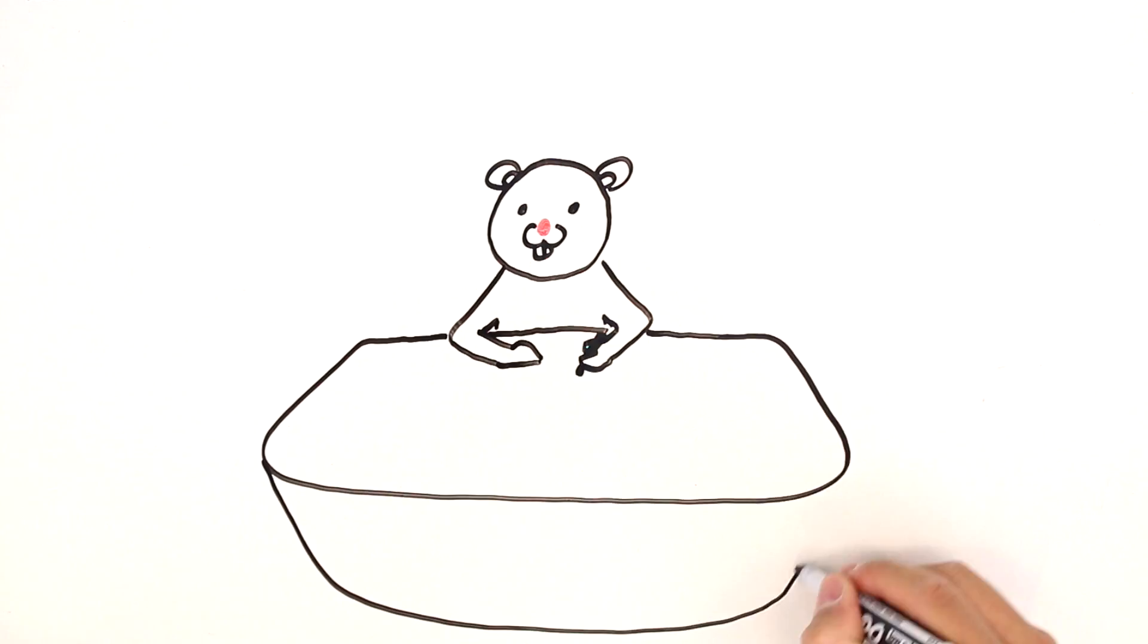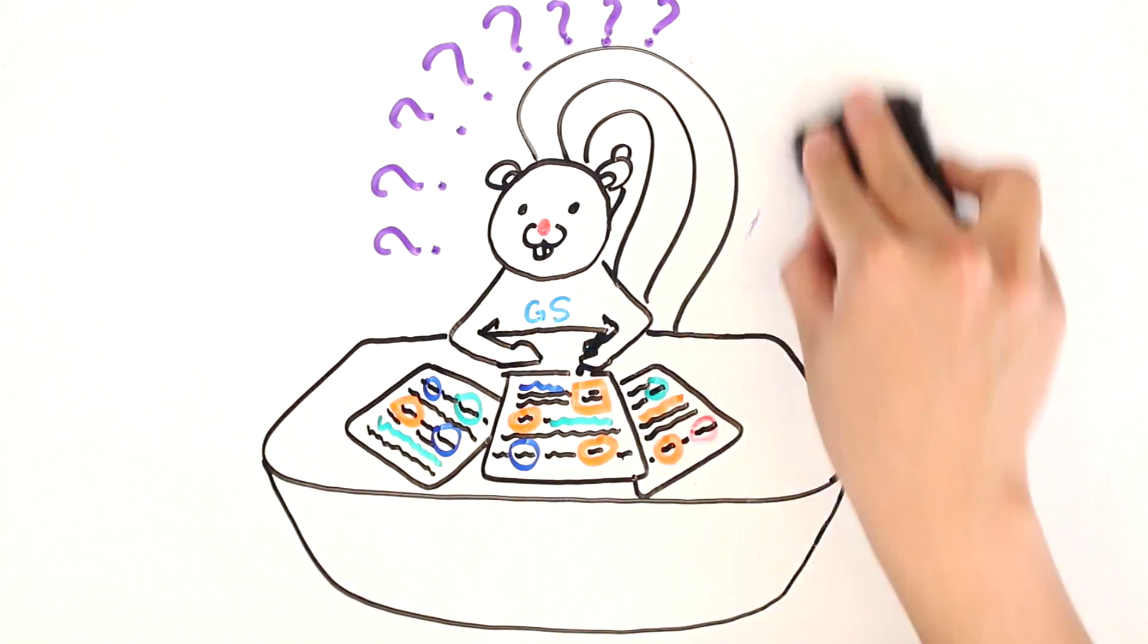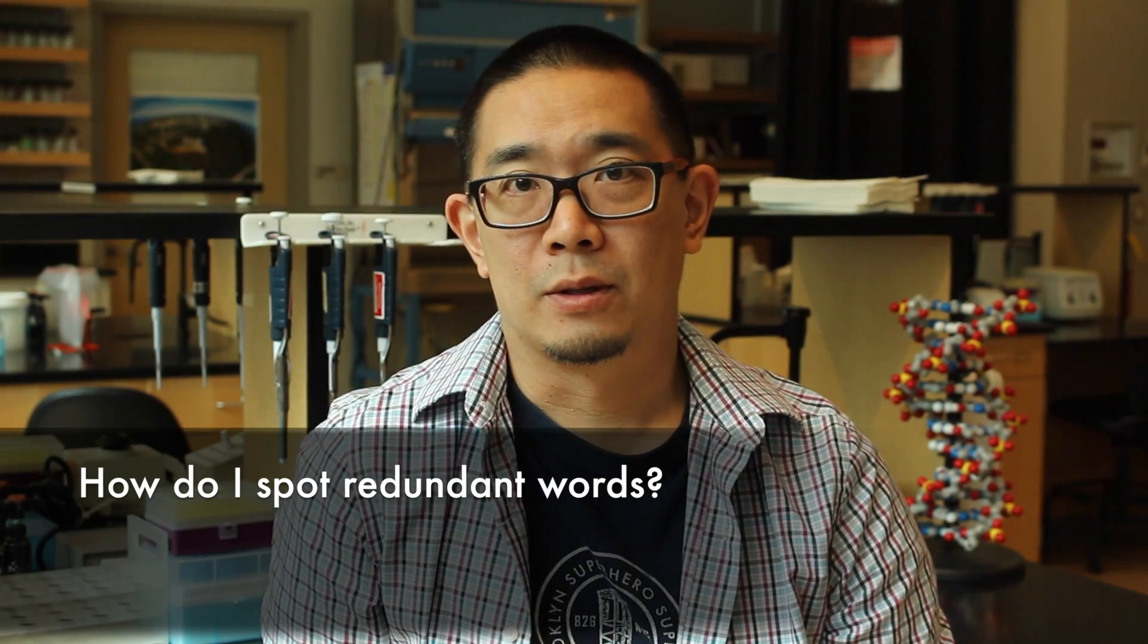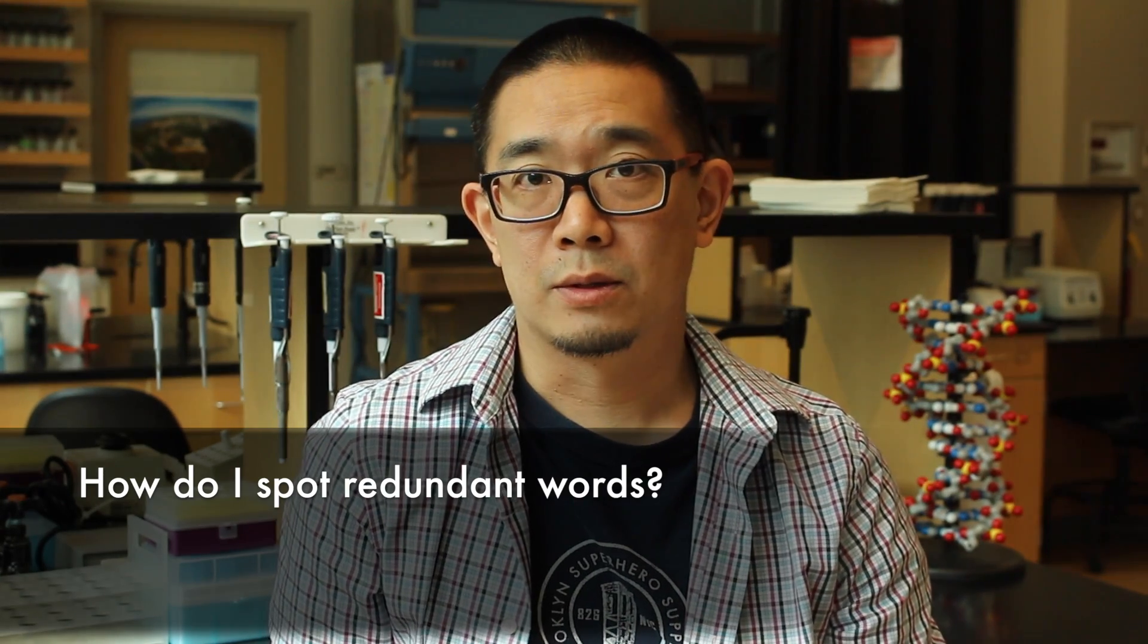Now, Grammar Squirrel is just wondering how she can eliminate unnecessary words. The easiest way to read your work and sort of take note that you are being as precise as possible with your writing is to look out for redundant words.